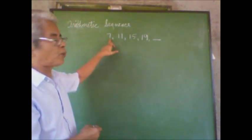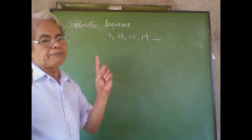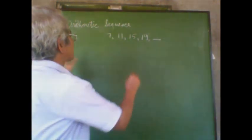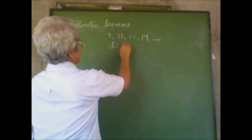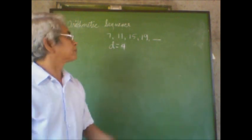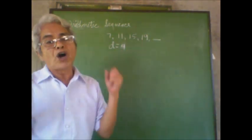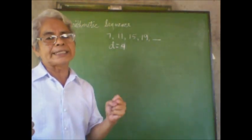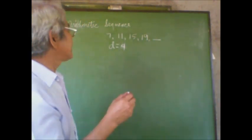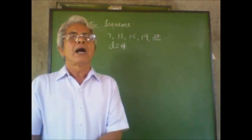We had an arithmetic sequence and our task yesterday was to simply find the next term. The first thing we have to do is find the common difference. In this example, our common difference is 4. How do we get that? 11 minus 7 is 4, 15 minus 11 is 4, 19 minus 15 is 4 — it's constant. Therefore the common difference is 4, and the next term is 23.